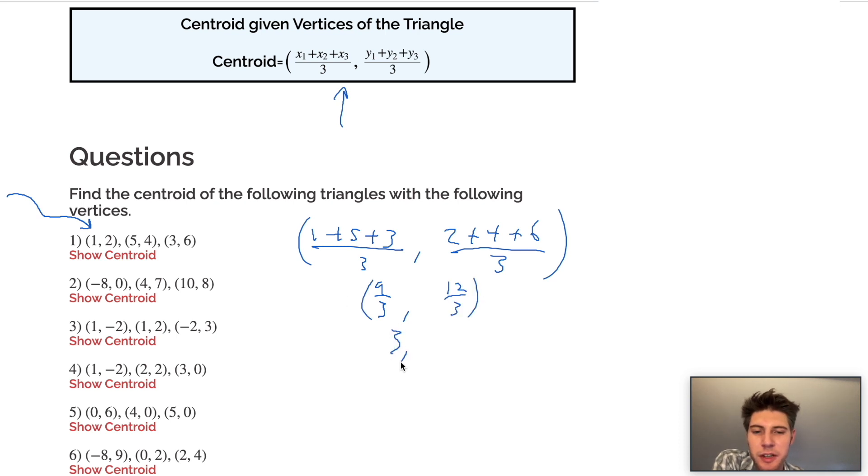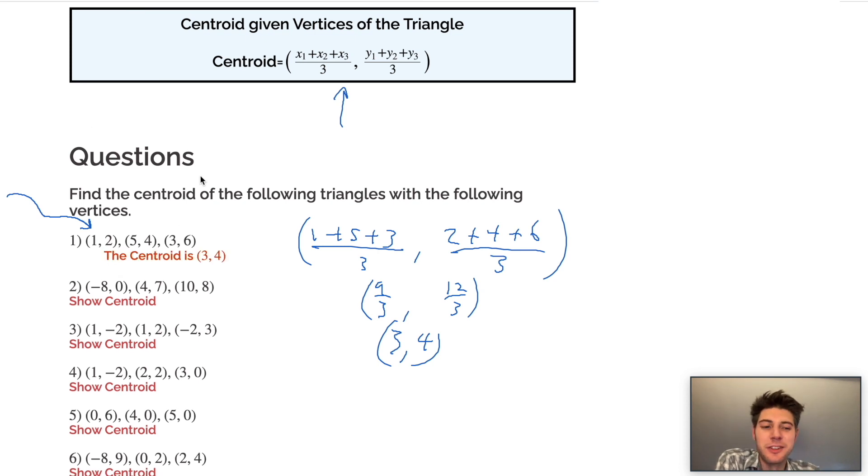Nine over three is three. Twelve over three is four. So the answer to this should be (3, 4). And it is (3, 4). Nice little shortcut.